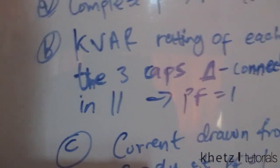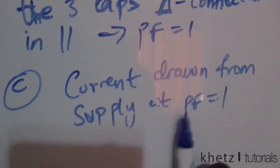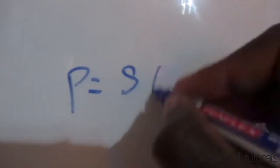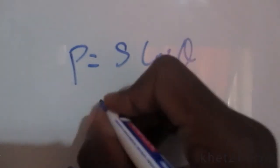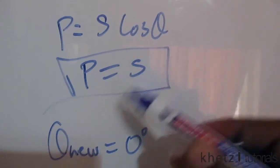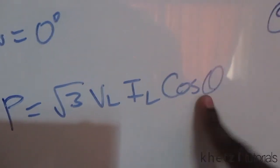Moving on to the last part: finding the current drawn from the supply at a unity power factor. Since the new angle is zero, the reactive power is zero and the apparent power equals the real power. Using the formula P equals square root of three times V_L times I_L times cosine(theta), with cosine(0) equal to one, we get I_L equals P divided by root three times V_L.